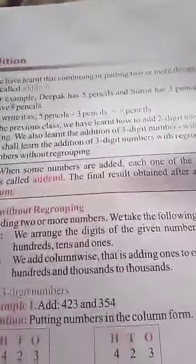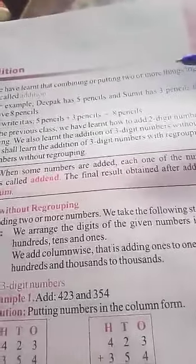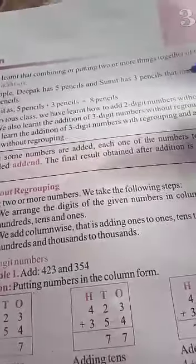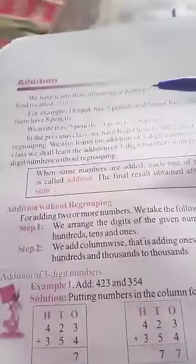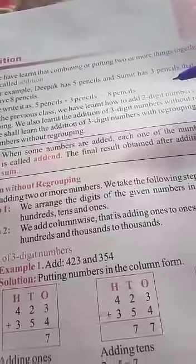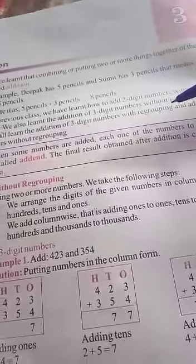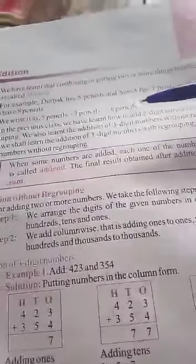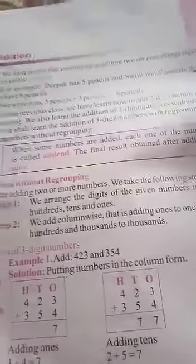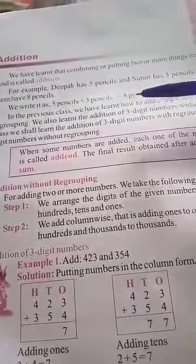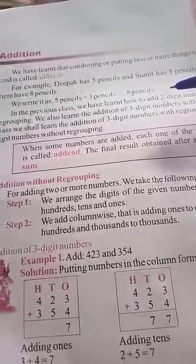Chapter 3 addition. We have learned that combining two or more things together of one kind is called addition. For example, Deepak has 5 pencils and Sumit has 3 pencils. That means both of them have 8 pencils, 5 plus 3. When we write 5 pencils plus 3 pencils equals 8 pencils.